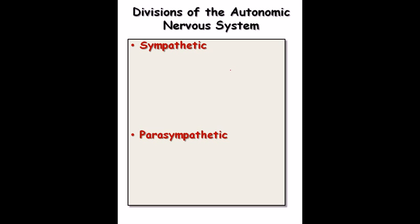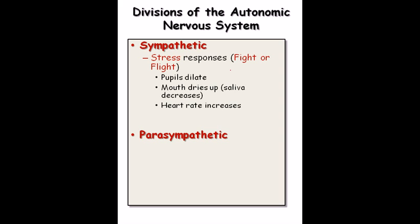The autonomic nervous system has two divisions: the sympathetic and the parasympathetic. The sympathetic division is the stress response, also called the fight-or-flight response. In dangerous or difficult situations, pupils dilate, the mouth dries up as saliva decreases, heart rate increases, and blood flow to skeletal muscles increases. For example, if you are walking and a car suddenly tries to hit you, you fight and run very quickly — your pupils dilate, your mouth dries, your digestive secretions are blocked, your heart rate increases, and more blood is pumped to your skeletal muscles to give you energy.